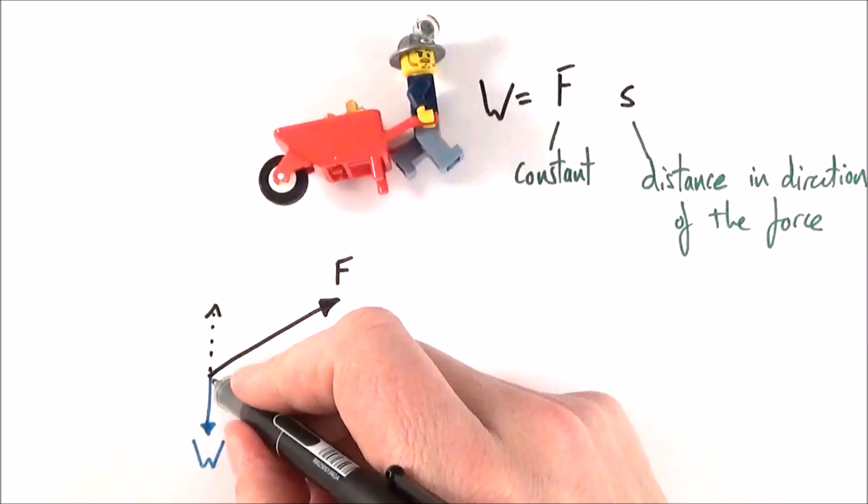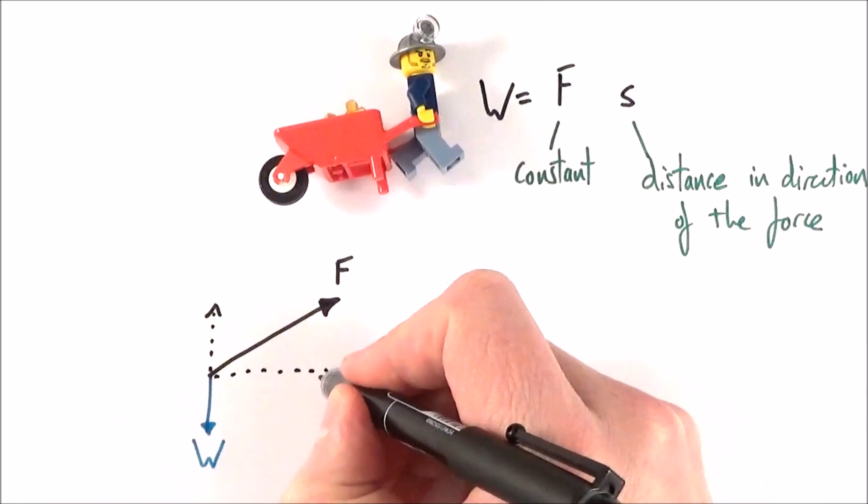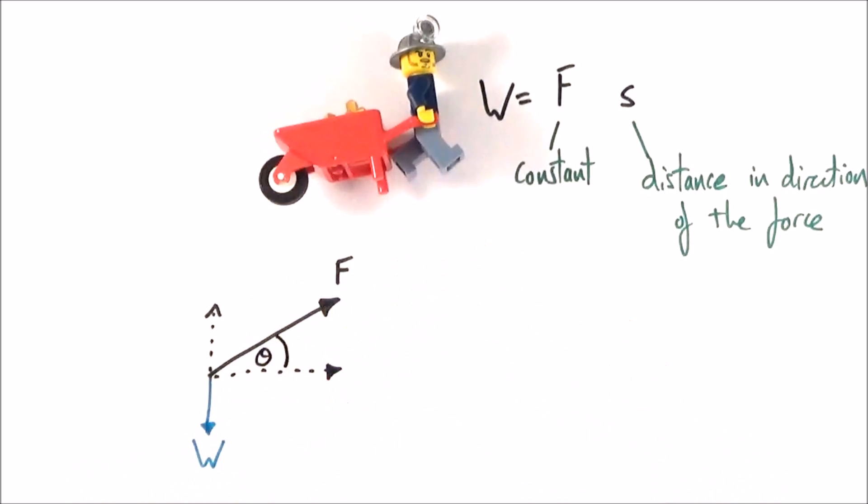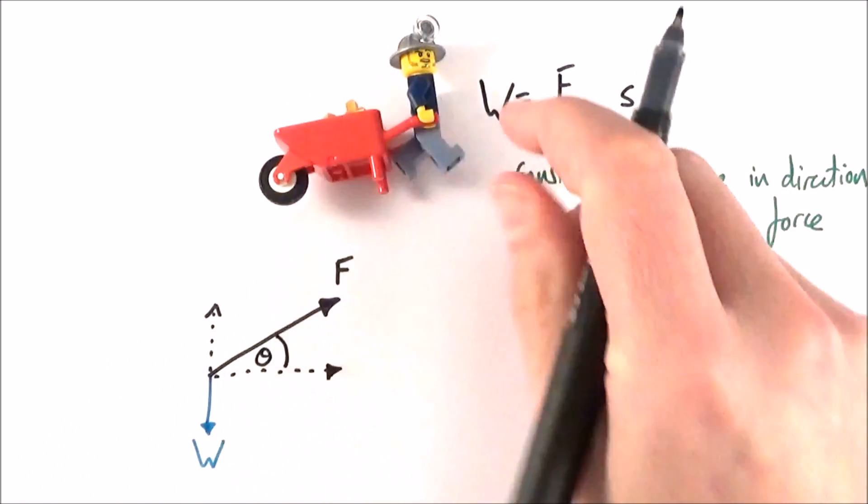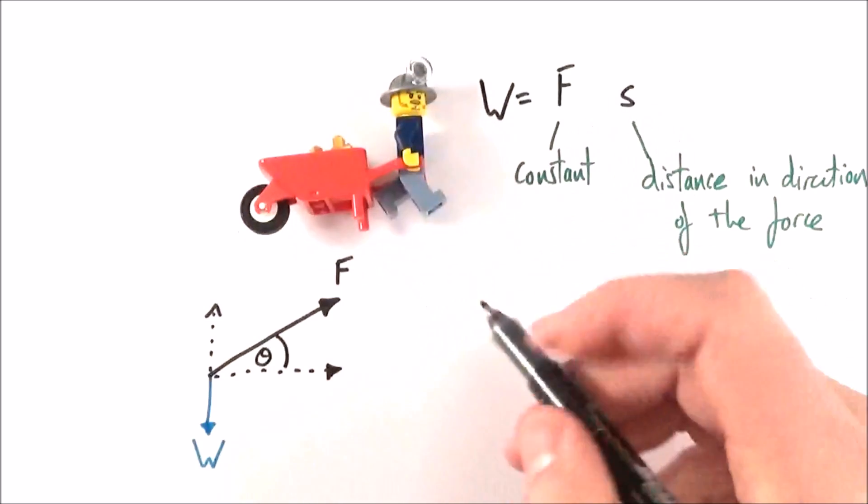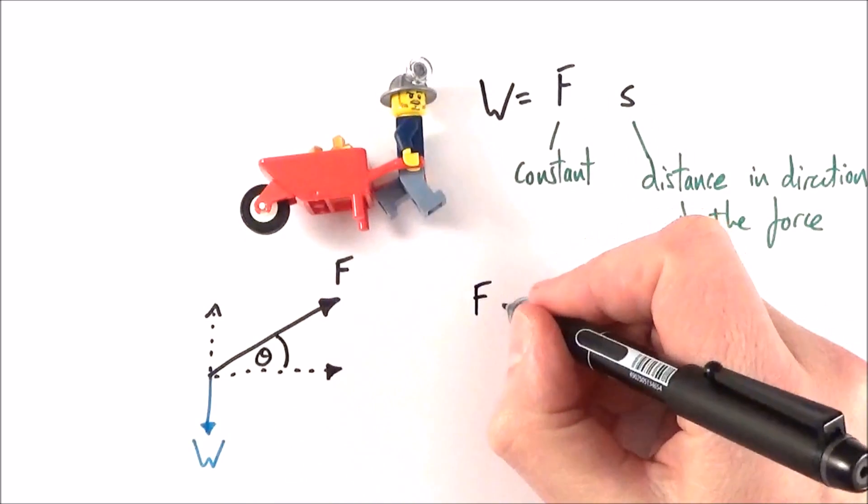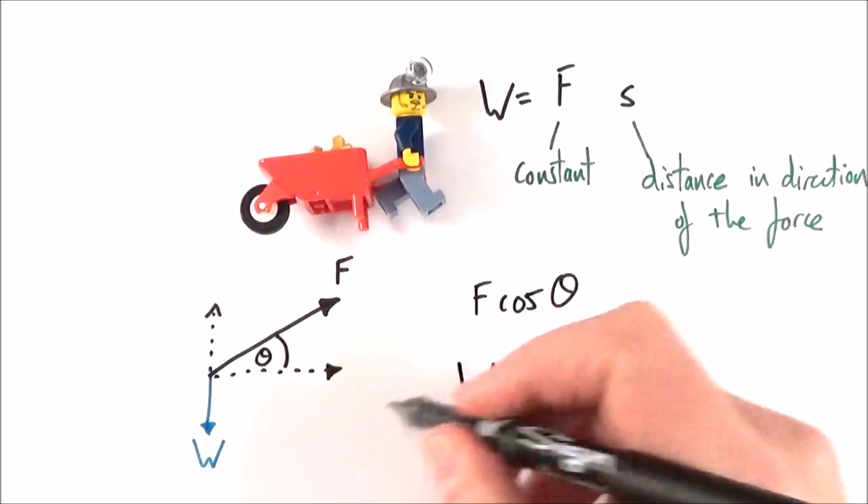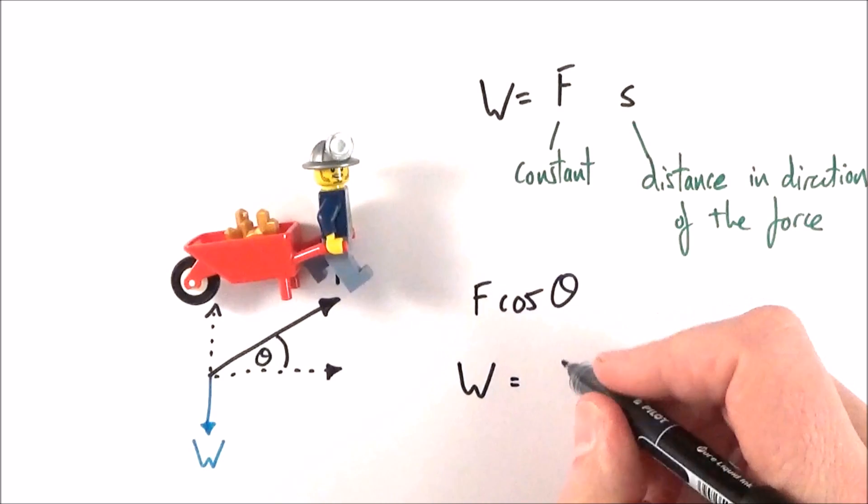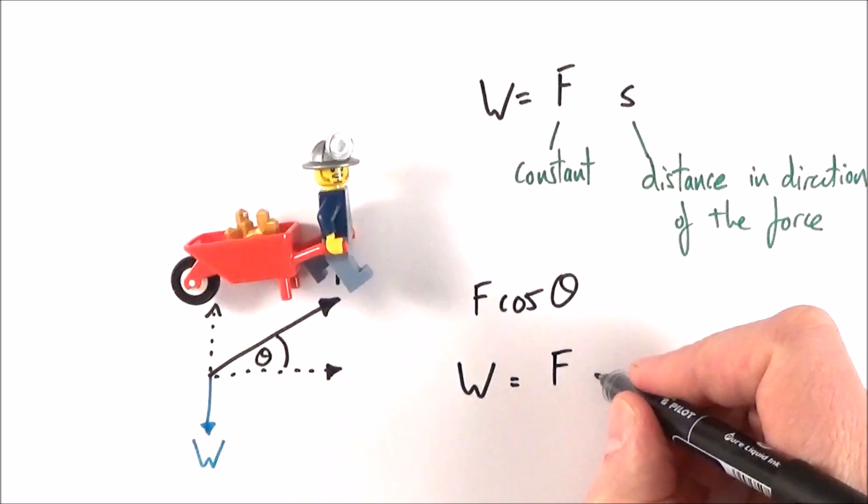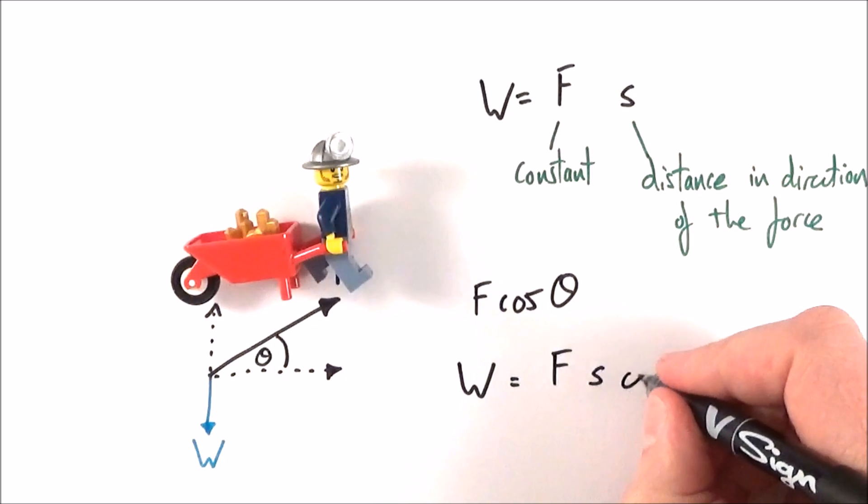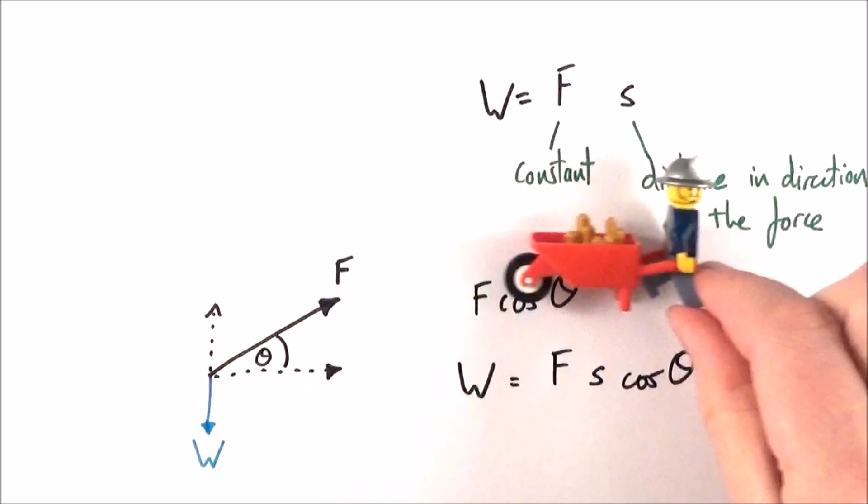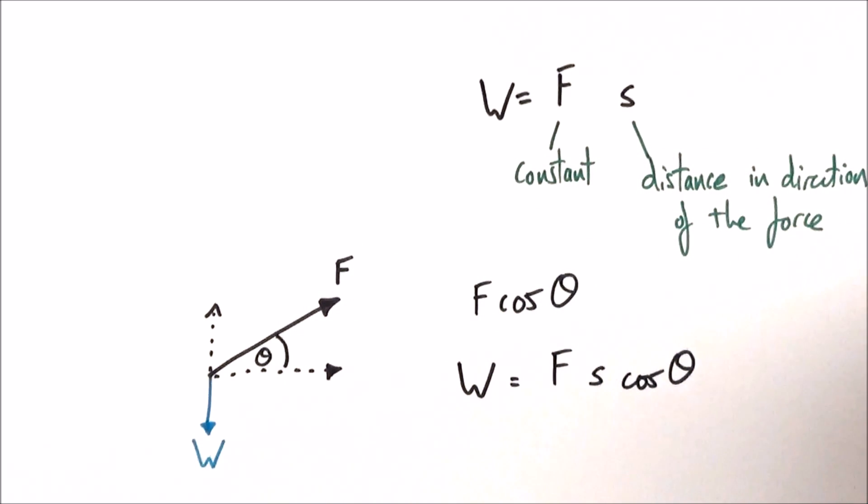But if the man is pulling it along, then the force in the direction he's moving is only a component of that force F. And if we think about the angle here being theta, then the component of force in the direction that the wheelbarrow is moving, if the wheelbarrow is moving to the right, there's a force to the right of F cos theta. So what that means is the actual work done in this example is equal to the force applied times the displacement to the right times cos theta. And that allows us to actually calculate the work done when the force is acting at an angle to the distance that it's moving.